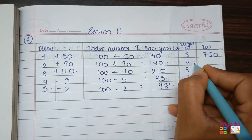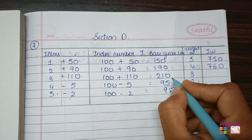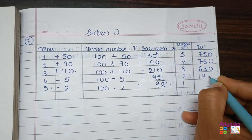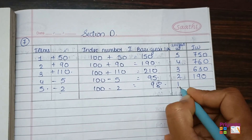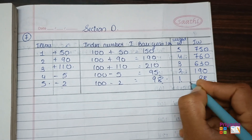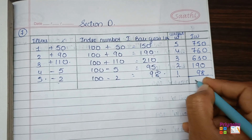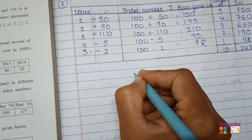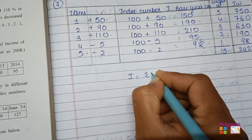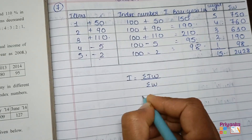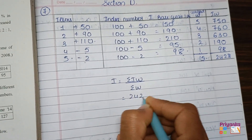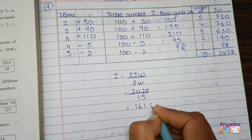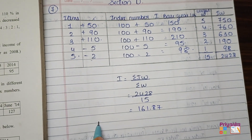Next, 190 multiplied by 4 gives 760. Then 210 multiplied by 3 gives 630. Next, 95 multiplied by 2 gives 190. And 98 multiplied by 1 gives 98. The total of the IW column is 2428 and the total weight is 15. Using the formula I = σIW ÷ σW, that is 2428 divided by 15, the answer is 161.87. That's the index number of fuel price.